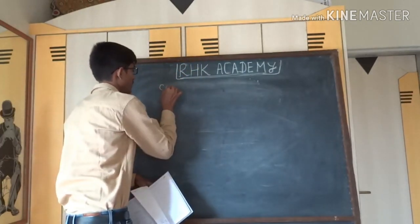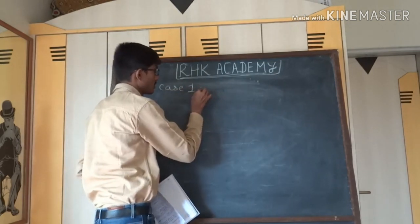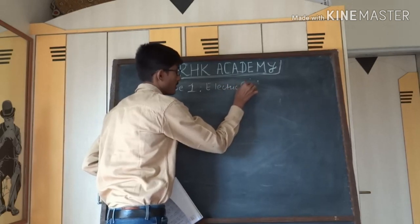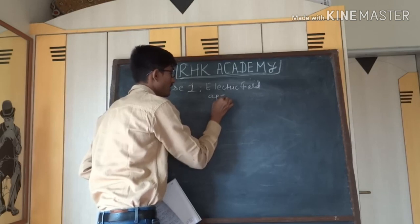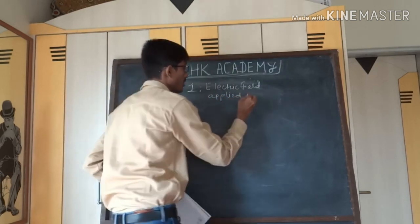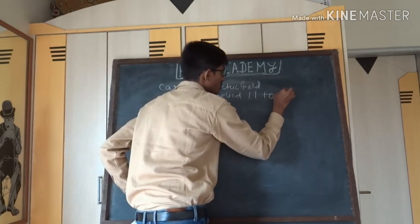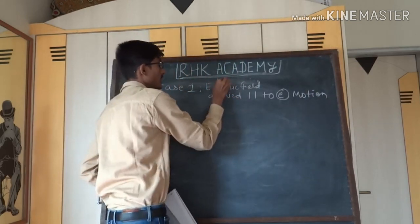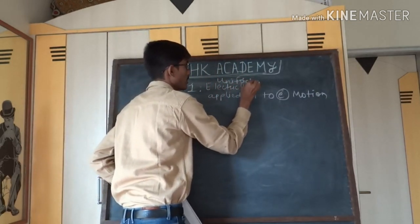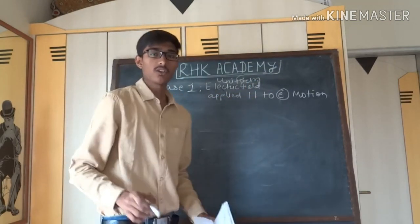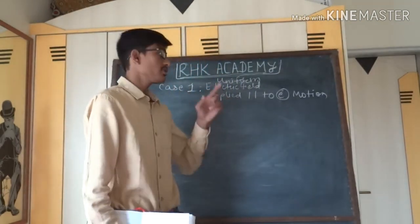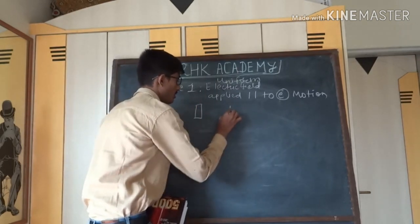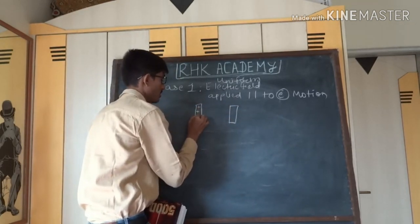Case 1: electric field applied parallel to electron motion. We know it is a uniform electric field applied parallel to electron motion. Now, how do we create a uniform electric field? As per our knowledge from 12th standard, we know that a capacitor produces a uniform electric field.